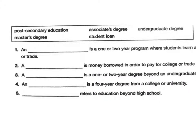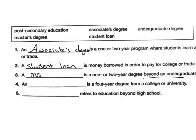Now we're looking at a few more vocabulary terms about different types of education. A one- or two-year program where students learn a skill or a trade is an associate's degree. Money borrowed in order to pay for college is a student loan. A one- or two-year degree beyond undergraduate is a master's degree. A four-year degree is an undergraduate degree, also known as a bachelor's.